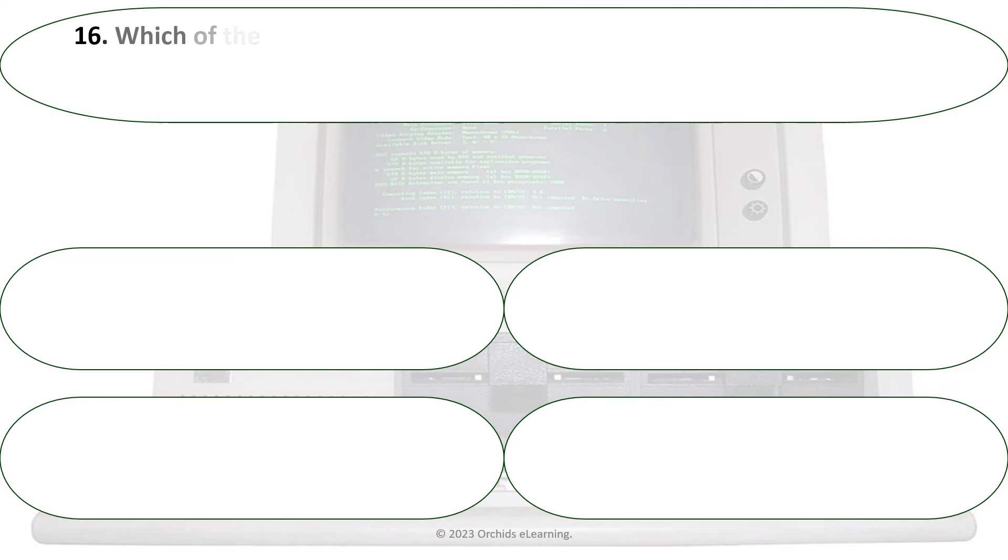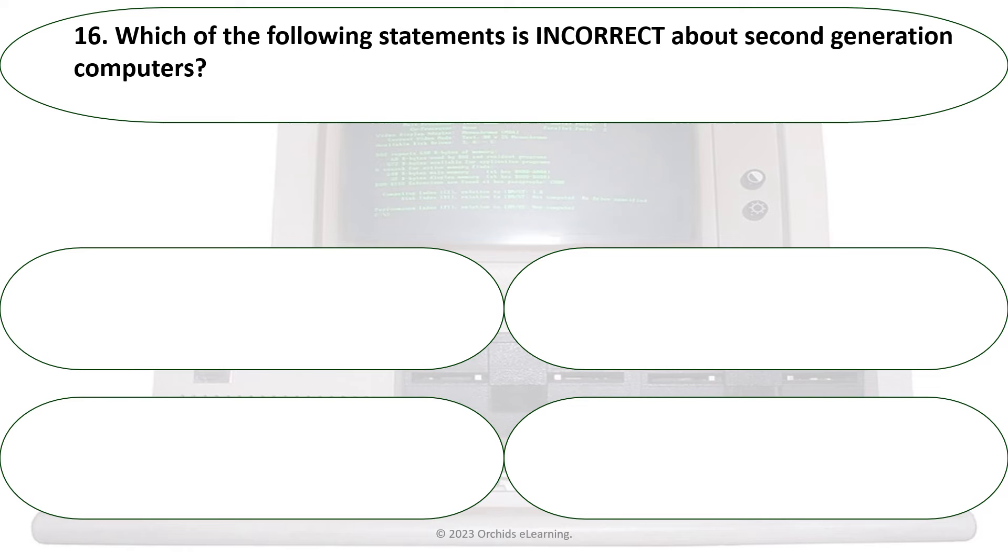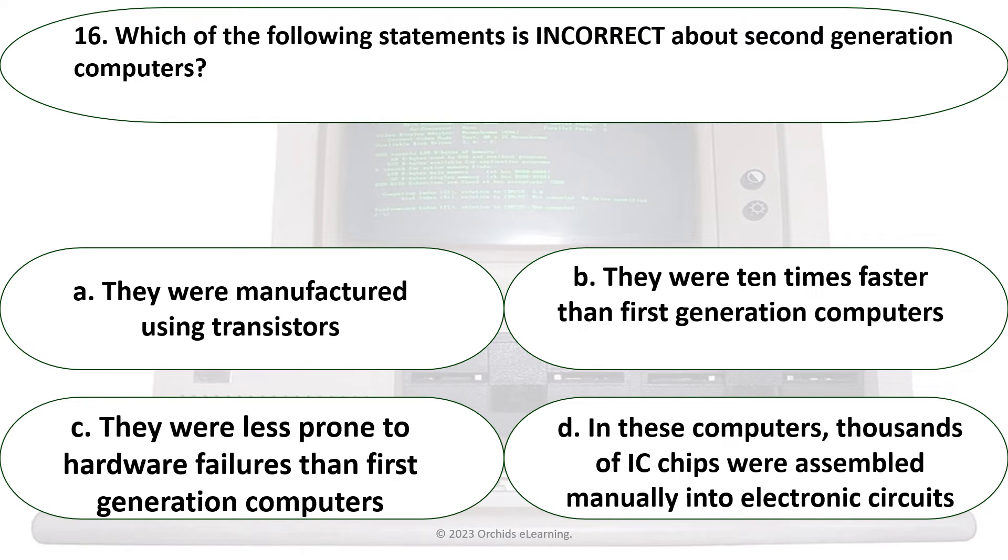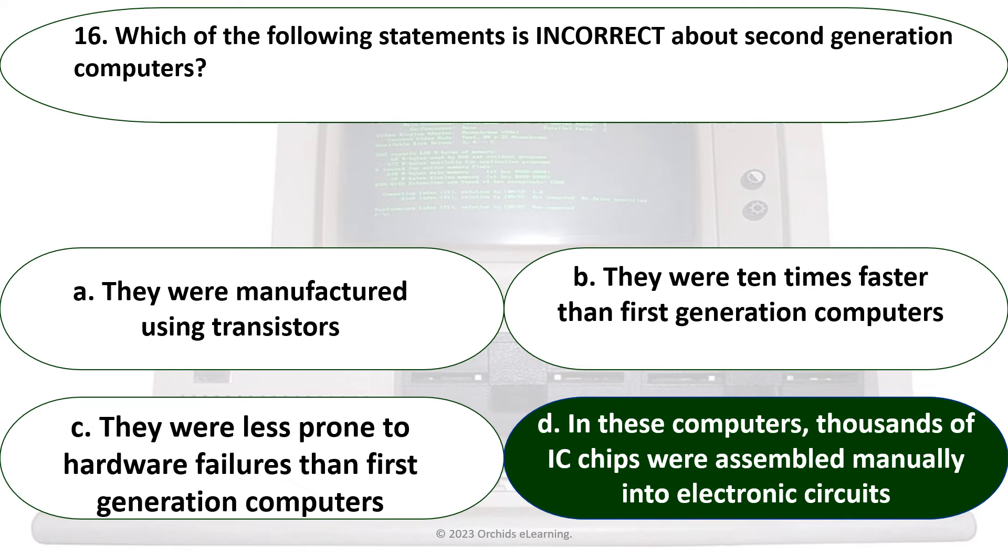Which of the following statements is incorrect about second generation computers? D. In these computers, thousands of IC chips were assembled manually into electronic circuits